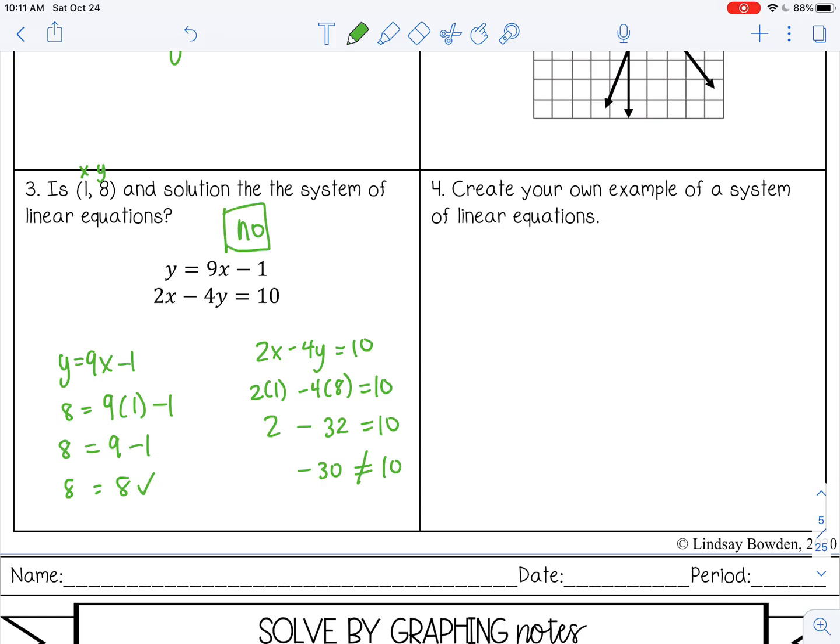Number four: create your own example of a system of linear equations. As long as you have two or more linear equations, that is a system. You can write your own; I'm just going to make up mine right here. They can be in any form you want: slope-intercept, standard, it doesn't matter as long as it's two or more.